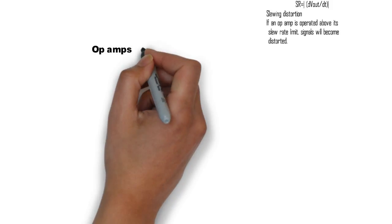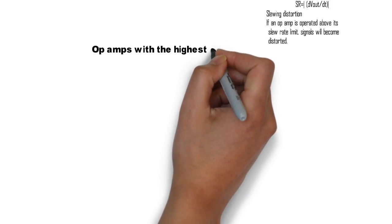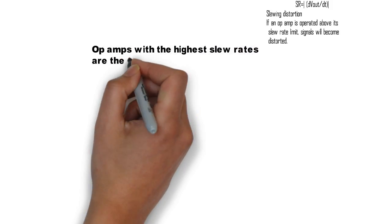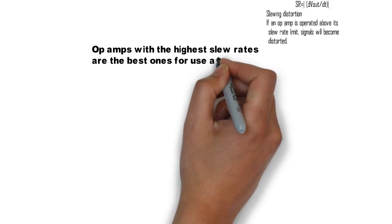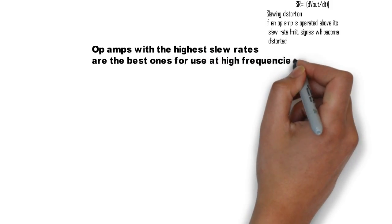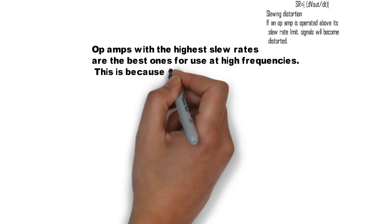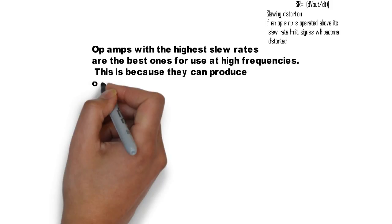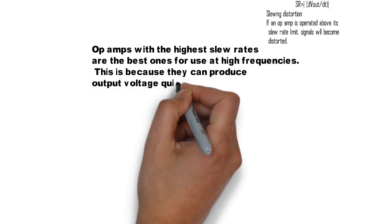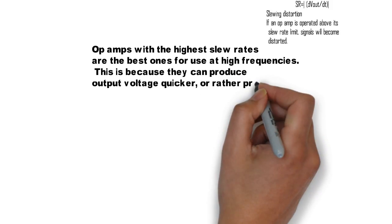Op-amps with the highest slew rates are the best ones for use at higher frequencies. This is because they can produce output voltage quickly, or rather, produce more output voltage per microsecond.